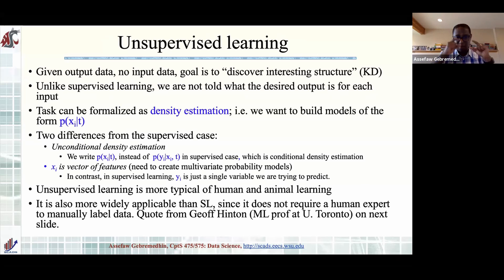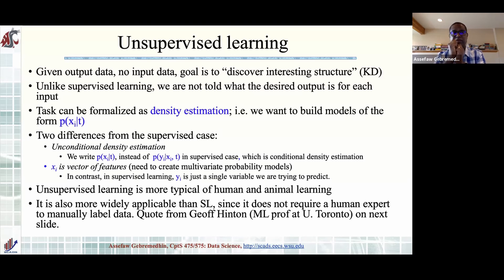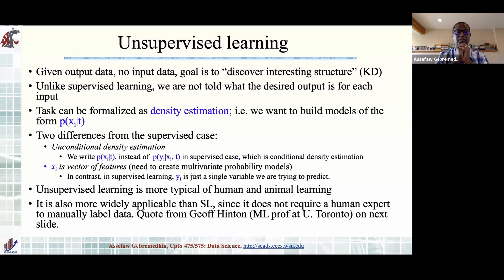We'll be talking about unsupervised learning today — this week is still the overview, which we'll wrap up today. Starting from the next lecture we'll look at specific methods. The key difference from supervised learning is that you are given output data with no labels. The task is to discover interesting structure — 'KD' stands for Knowledge Discovery, also the name of the KDD conference (Knowledge Discovery and Data Mining). Unlike supervised learning, there is no desired output for each input.